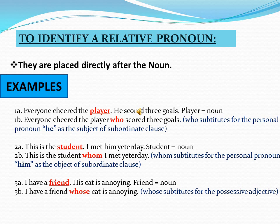Let's look at some examples. Sentence 1A: 'Everyone shared the player. He scored three goals.' In this sentence, 'player' is a noun. When we combine these sentences using a Relative Pronoun, we get: 'Everyone shared the player who scored three goals.' Here, 'who' is the Relative Pronoun, placed directly after the noun 'player.'